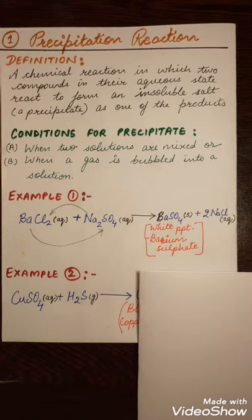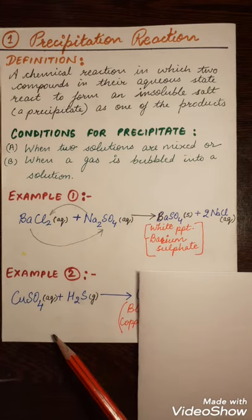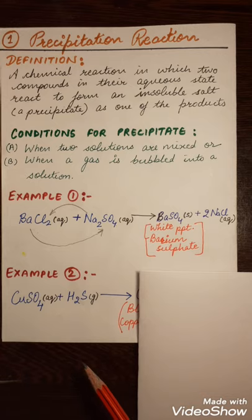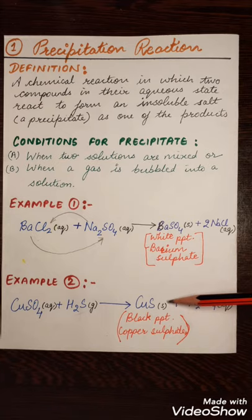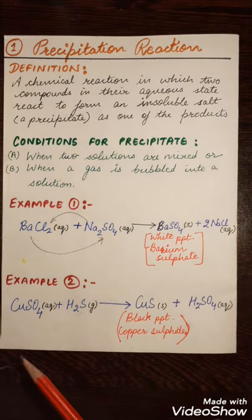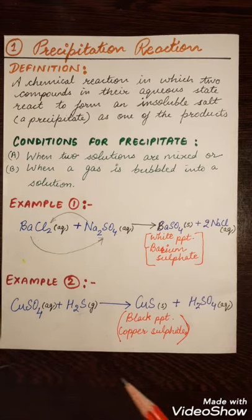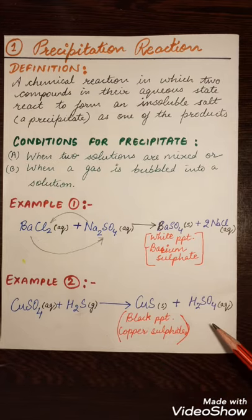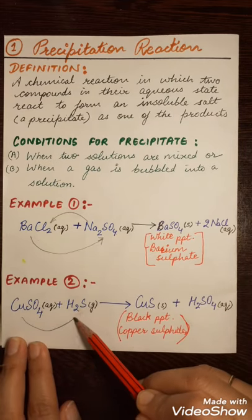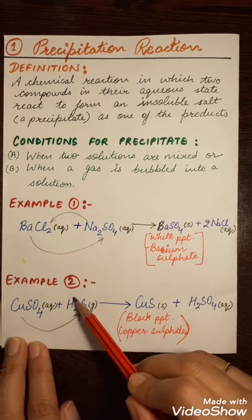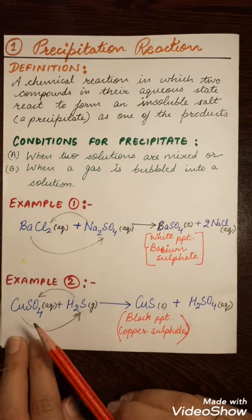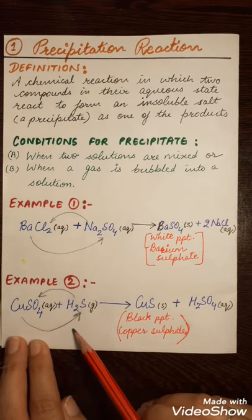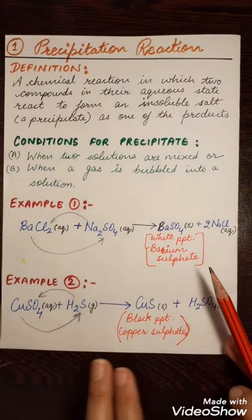Now let us understand the second example of precipitation reaction. H₂S gas is passed into the solution of copper sulfate and a black precipitate is formed. Can you guess the products? We get a black precipitate of copper sulfide and sulfuric acid is formed. Copper sulfate reacts with hydrogen sulfide producing insoluble copper sulfide — black in color — and sulfuric acid. Copper ion goes with the sulfide ion and hydrogen ion goes with the sulfate ion, so there is an exchange of ions, making this a double displacement reaction.